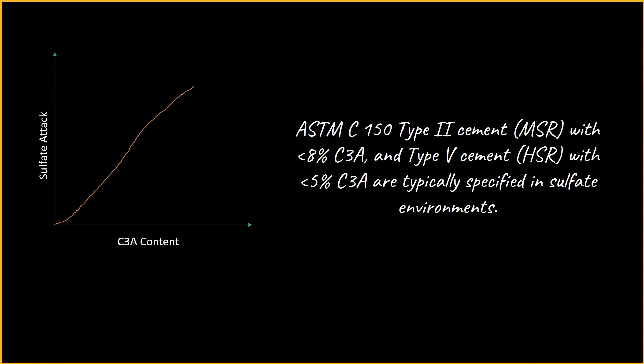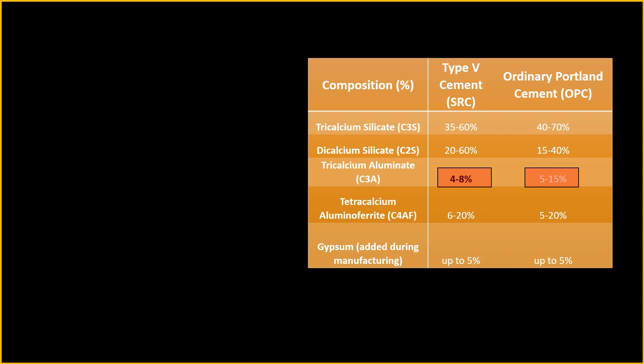To be more precise about the codes and recommendations for sulfate-resisting cement: ASTM C150 provides sulfate-resisting cement under Type 5. ASTM C150 Type 2 cement, for medium sulfate resistance, has a C3A content less than 8%. Type 5 cement — high-sulfate-resistant cement — has a C3A content less than 5% and is typically specified for sulfate environments.